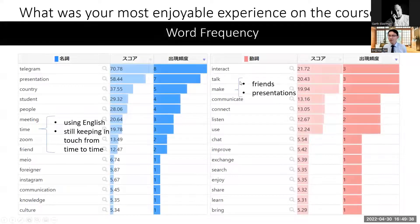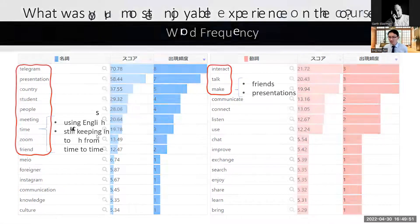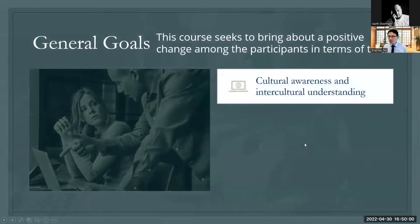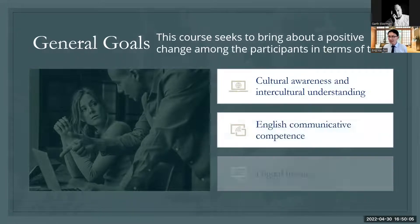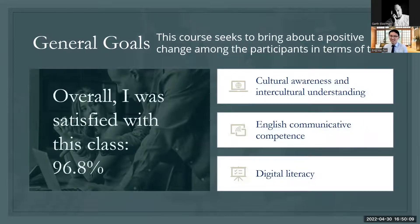I ran the frequency analysis again and you can see it is the same: Zoom meeting, Telegram, presentation, interaction, talk, making friends. And now they are still keeping in touch through Facebook or Instagram. So they enjoyed Telegram, the final presentation, and the online live meeting the most.